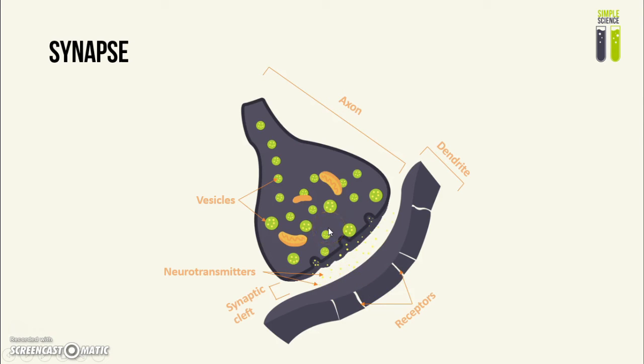The neurotransmitters then bind to the neurotransmitter receptor molecules on the dendrite of the next neuron, which are these molecules, and then a nerve impulse is triggered in the postsynaptic membrane, which is this stuff, as a result of the neurotransmitter binding to the receptor molecules.